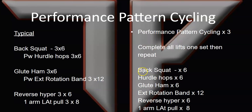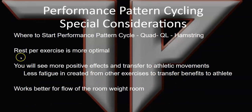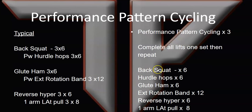This also optimizes rest periods. You might be five to six minutes before you get back to an exercise when you cycle through — sometimes even more. I've seen some of my big cycles take eight to eight and a half minutes before they're coming back to the top exercise, which is an excellent benefit. You'll see more positive effects and transfer to athletic movements basically because there's less fatigue causing detriment to the other exercises. The back squat doesn't fatigue out the reverse hyper or the glute ham.